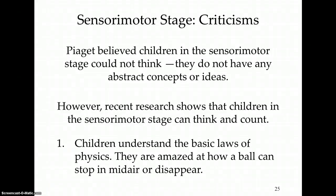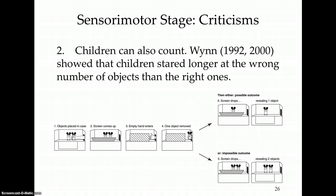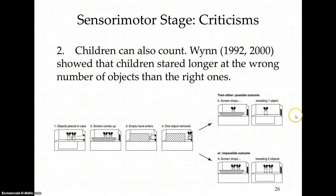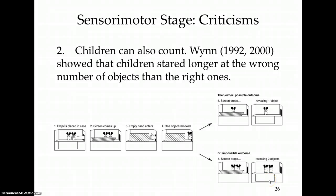Another recent example involves addition: very young children can count. Psychologist Dr. Wynn showed that children stared longer at the wrong number of objects than the right ones. In the experiment, two objects were placed in a case, a screen came up, and the child saw an empty hand remove one object. When the screen dropped revealing just one object, children expected this. But if an impossible outcome occurred — the screen dropped and two objects were still there — children were surprised, showing they can count and have expected outcomes.